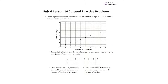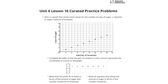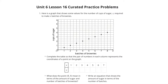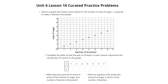Question 1. Here's a graph that shows some values for the number of cups of sugar, S, required to make X batches of brownies. So we have X batches of brownies and S cups of sugar, and you can see that also labeled on the graph.